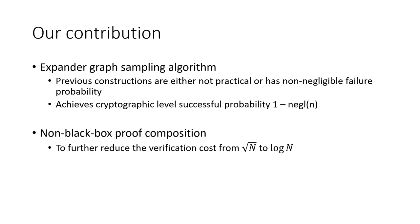Here is our technical contribution. Our linear prover comes from a new expander sampling algorithm. This expander sampling algorithm enables us to sample an expander with a cryptographic level of accessible probability. Such an expander enables us to construct a linear-time encodable linear code, which ultimately leads to a linear-time prover. The second contribution is non-black-box proof composition, which enables us to further reduce the verification cost from square root of n to log n.